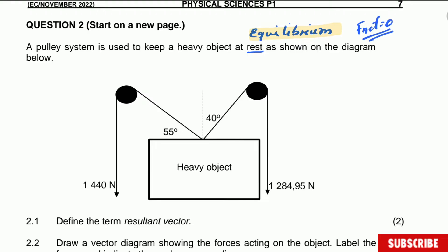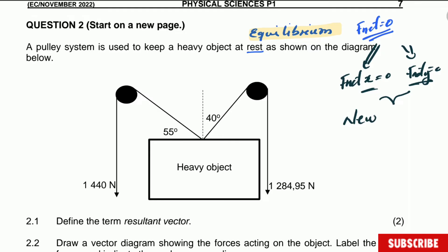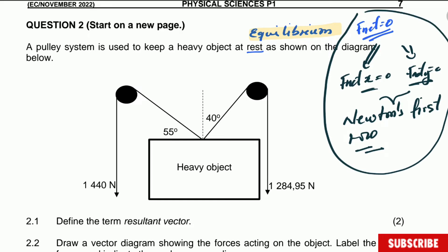If the system is at equilibrium, it means that the net force is equal to zero. The total net force is equal to zero — F_net in the x-axis is equal to zero, as well as F_net in the y-axis is also equal to zero. This is nothing other than Newton's first law. So you can actually use Newton's first law to solve this question.